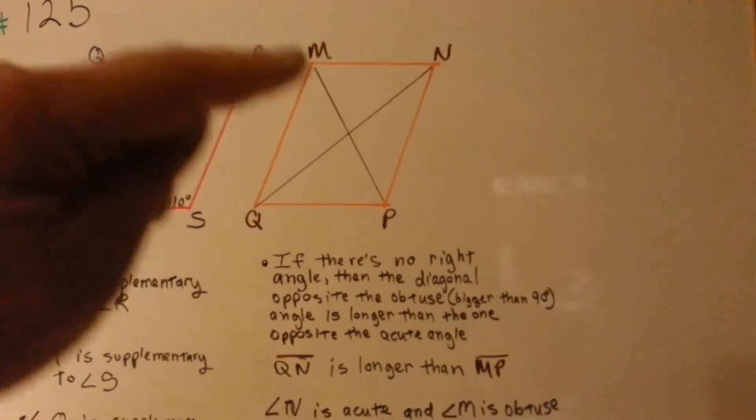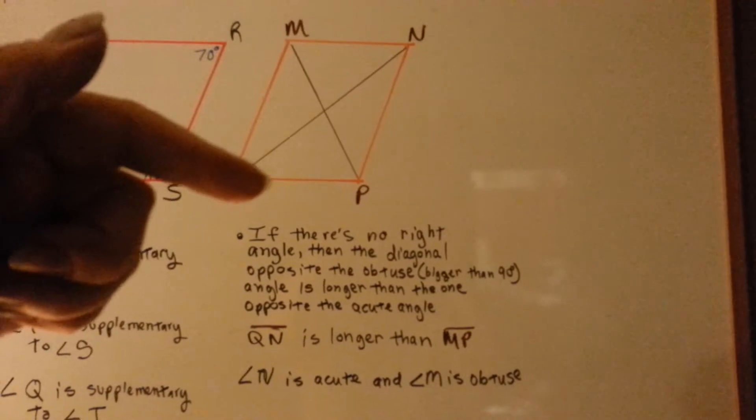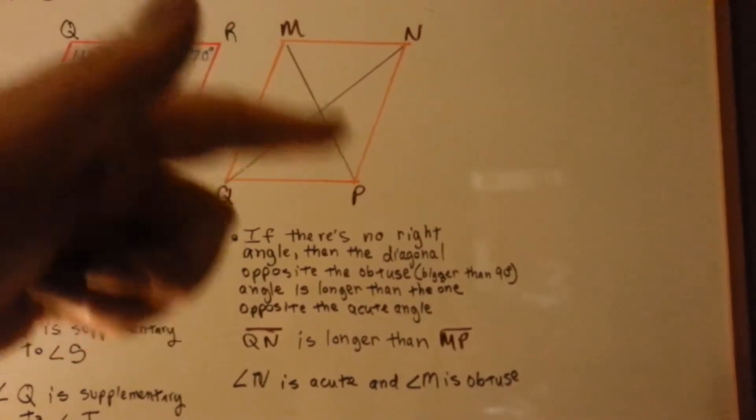In this drawing, if you notice there's no right angle, well, when the diagonal opposite the obtuse one, here's the obtuse angles.